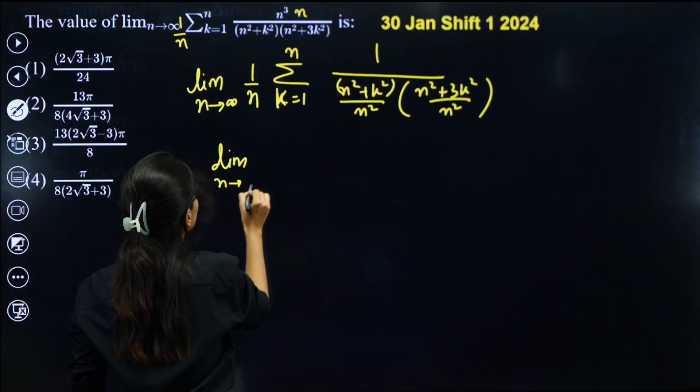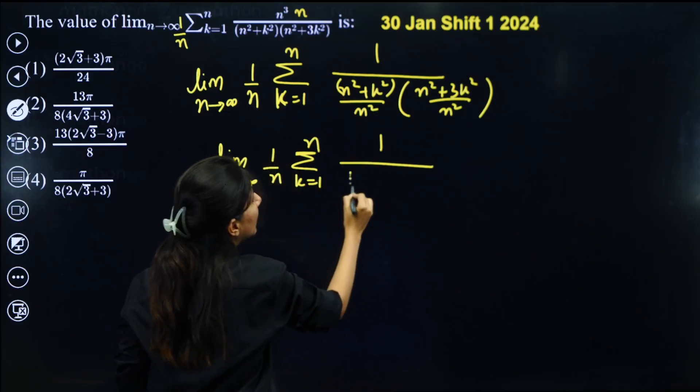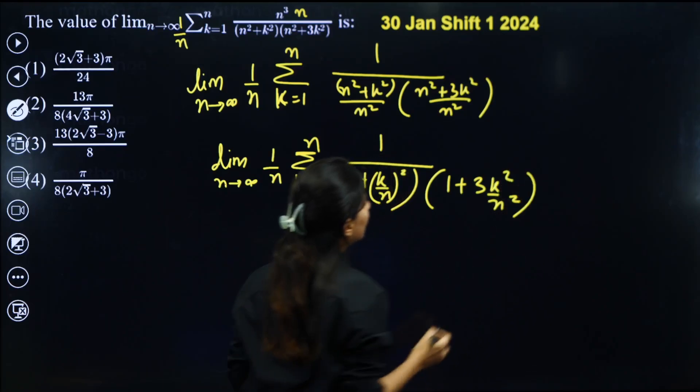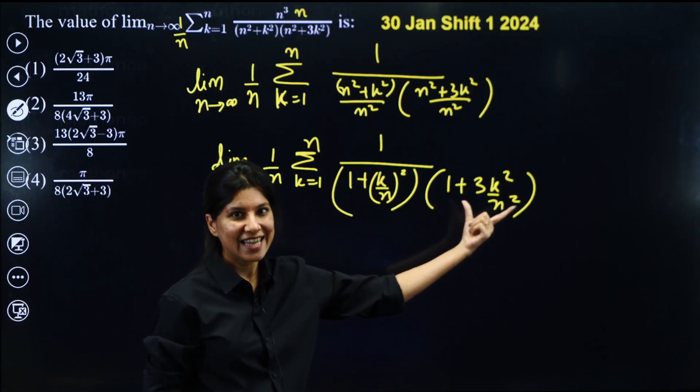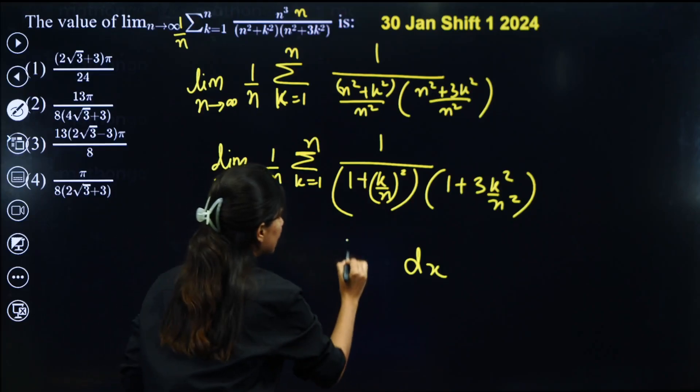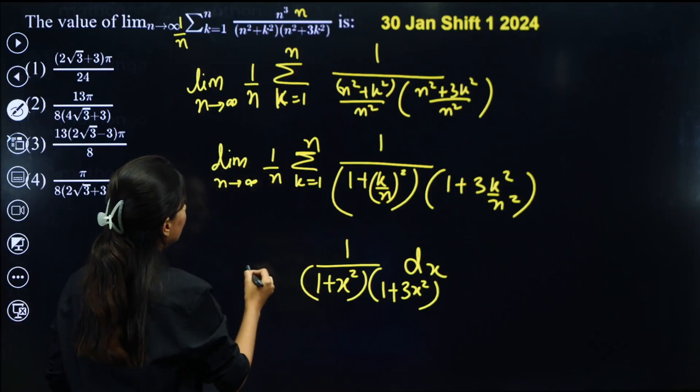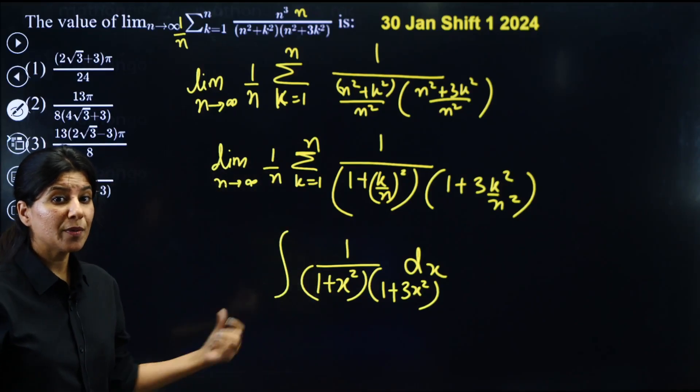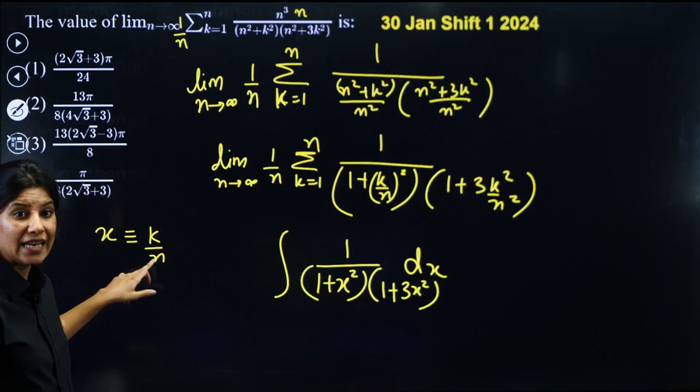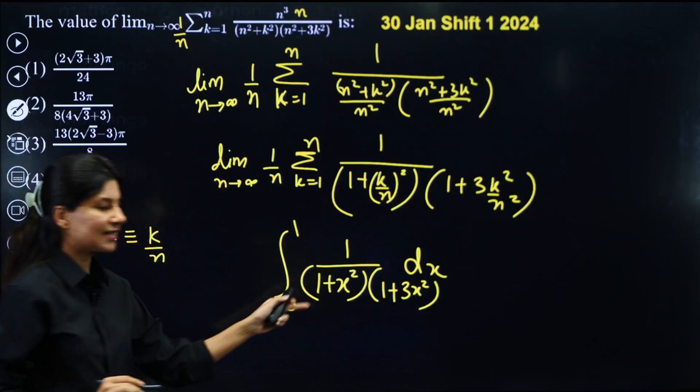Now limit N tend to infinity, 1 by N, sigma is there, K equals 1 to N. And 1 upon, can you see this is 1 plus K by N whole square. And this is 1 plus 3K by N whole square. Now K by N clearly will be replaced by x. And 1 by N will be replaced by dx. So we can replace: dx, 1 upon 1 plus x square, 1 plus 3x square. And we are having integral. What about limits? Lower limit: 1 by N, N tend to infinity, 1 by infinity is 0. Upper limit is N by N, so 0 to 1. This is our integration.